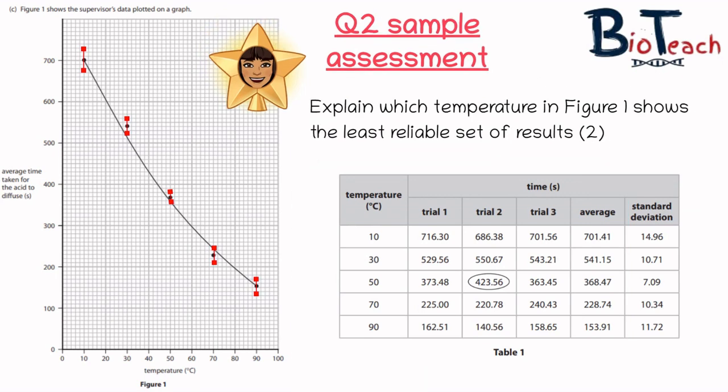So the next question talks about how to explain which temperature of the ones that they've tested shows the least reliable set of results. Now one thing that you'll grow to understand when you look at standard deviation in a bit more detail is the bigger the standard deviation, the less reliable that particular result is. This is because the means basically seem to vary so much. That's what creates a bigger standard deviation - it's when your readings from your trials are so different from each other. So in this particular question the least reliable set of results would be for the 10 degree temperature because the standard deviation is the largest for this particular temperature. So that should give you a good point to be able to look out for when you get questions about standard deviation and the reliability of results.